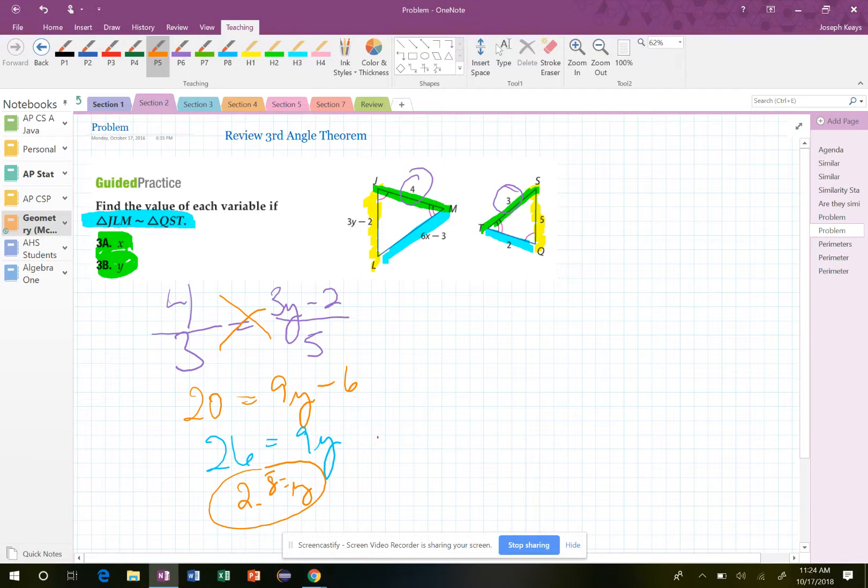So sometimes I second guess myself when I don't get a whole number. But I don't think I've done anything wrong in here. 4 divided by 3 is equal to 3Y minus 2 all over 5. I cross from the other 20. I got 9Y minus 6. So yeah, that's all good. It's 2.8 repeated.